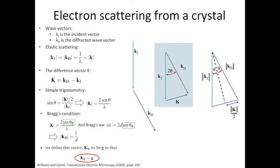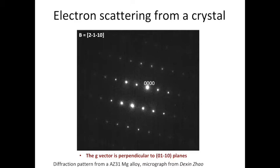So what is the g vector? Intuitively, if we look at the diffraction pattern, we identify the center spot or the transmitted beam, which we call (000), and we have a diffracted beam here, which is (01-10). If we draw a vector from the transmitted beam to the diffracted beam, this is the g vector. Note that the g vector is perpendicular to the set of planes. In this case, it's perpendicular to the (01-10) planes.